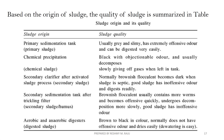Based on the origin of sludge, the quantity of sludge is summarized in a table. Different sludge sources include: primary sedimentation tank, chemical precipitation units, secondary clarifier, and secondary sedimentation after trickling filter.